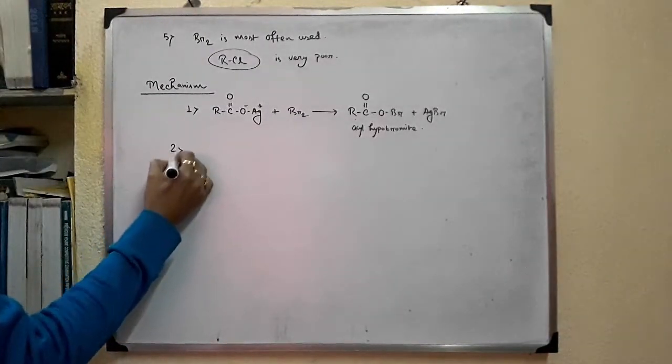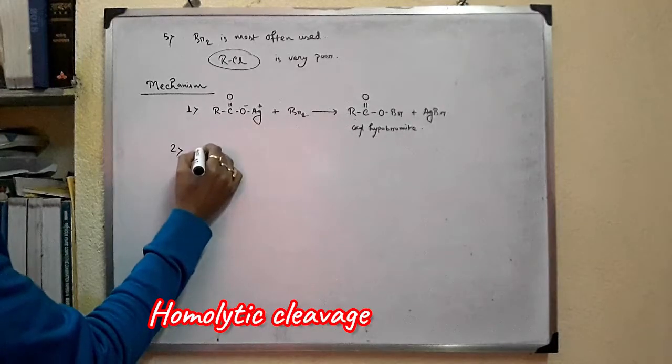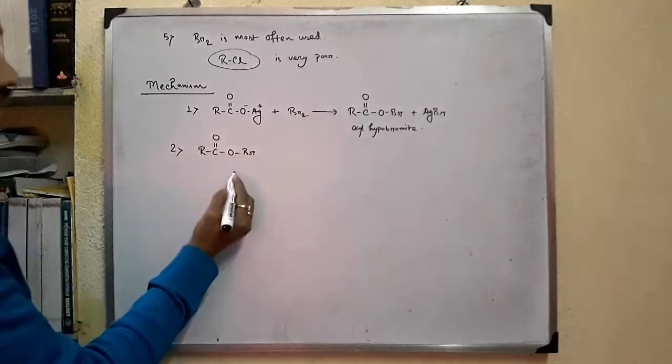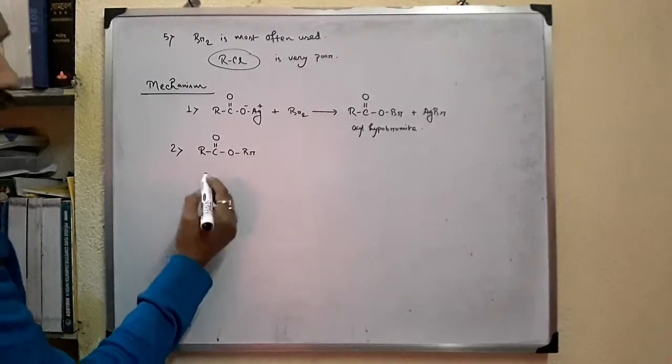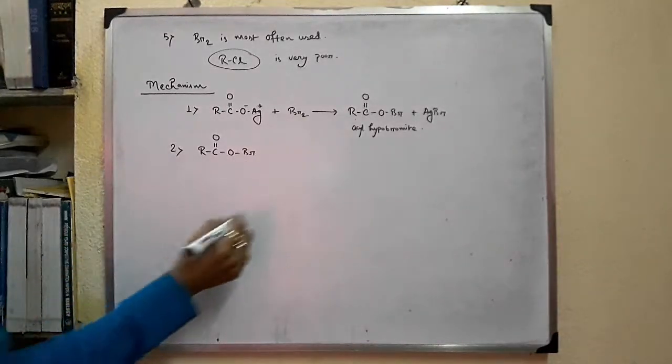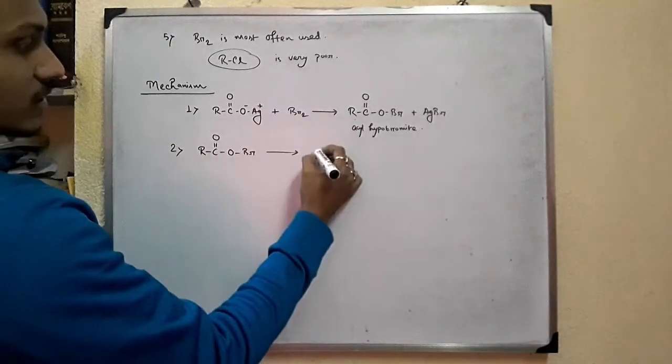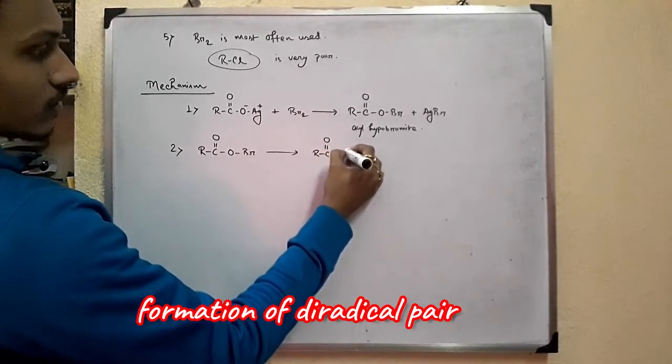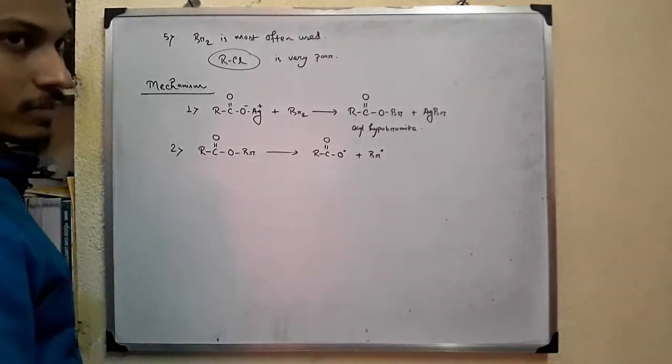The second step is the homolytic cleavage. And cleavage occurs here, between this oxygen and bromine bond, because this bond is very weak. So, homolytic cleavage occurs and a diradical pair is formed.